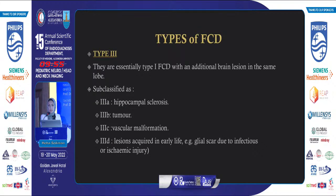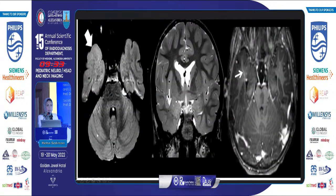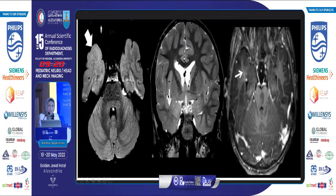Type 3 FCD is essentially type 1 in addition to a brain lesion in the same lobe. It is subclassified into type A (associated with hippocampal sclerosis), type B (associated with a tumor), type C (with vascular malformation), and type D (lesions acquired in early life, such as glial scar due to infectious or ischemic injury). An axial FLAIR shows subtle increased intensity in the right temporal lobe; coronal T2 shows blurring of the gray-white matter junction; axial T1 post-contrast shows linear hyperenhancement consistent with a DVA. This is type 3 FCD.